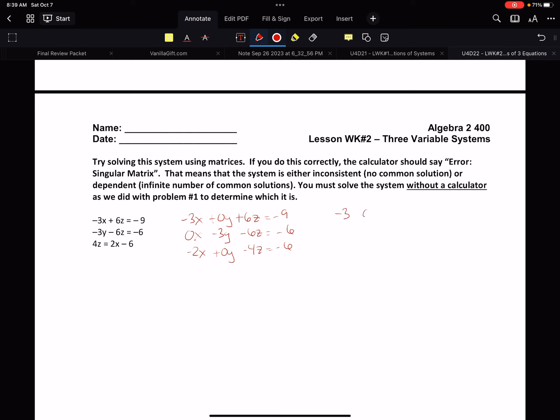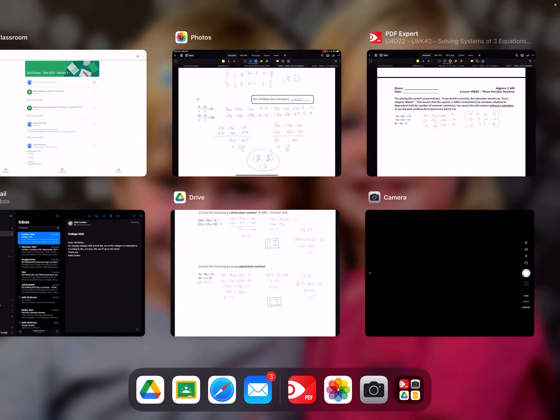So my matrix is going to look like negative 3, 0, 6, negative 9, 0, negative 3, negative 6, negative 6, negative 2, 0, negative 4, negative 6. There's our matrix. Let's put that in, so doing the same process again.